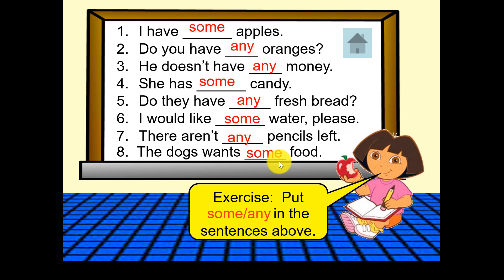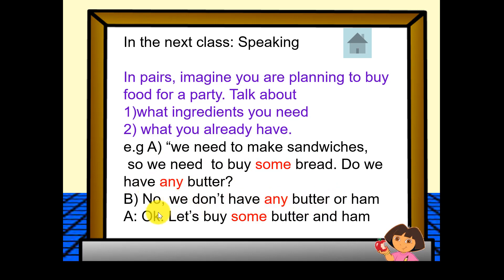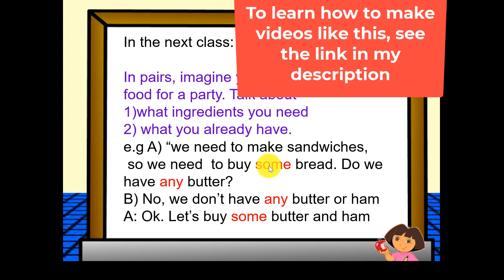So that's the end. We're going to move on next class and continue with this topic. We'll do some speaking in class — you'll work with a partner to plan a party. You have to buy food and talk about what ingredients you have in your fridge and what you need to buy. For example: 'We need to make some sandwiches, so we need to buy some bread. Do we have any butter? No, we don't have any butter or ham. Let's buy some butter and ham.' You'll have conversations similar to this, and I will walk around and help you check the grammar.